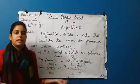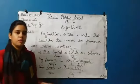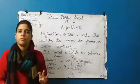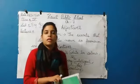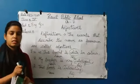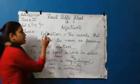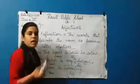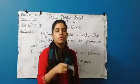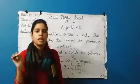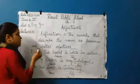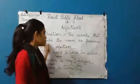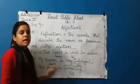So I have told you the five kinds: adjective of quality, adjective of quantity, adjective of number, demonstrative adjective, and interrogative adjective. I have given you a brief introduction, and I will explain each one in detail in the upcoming class. For now, each student must learn the definition of adjective and the kinds of adjectives. Thank you.